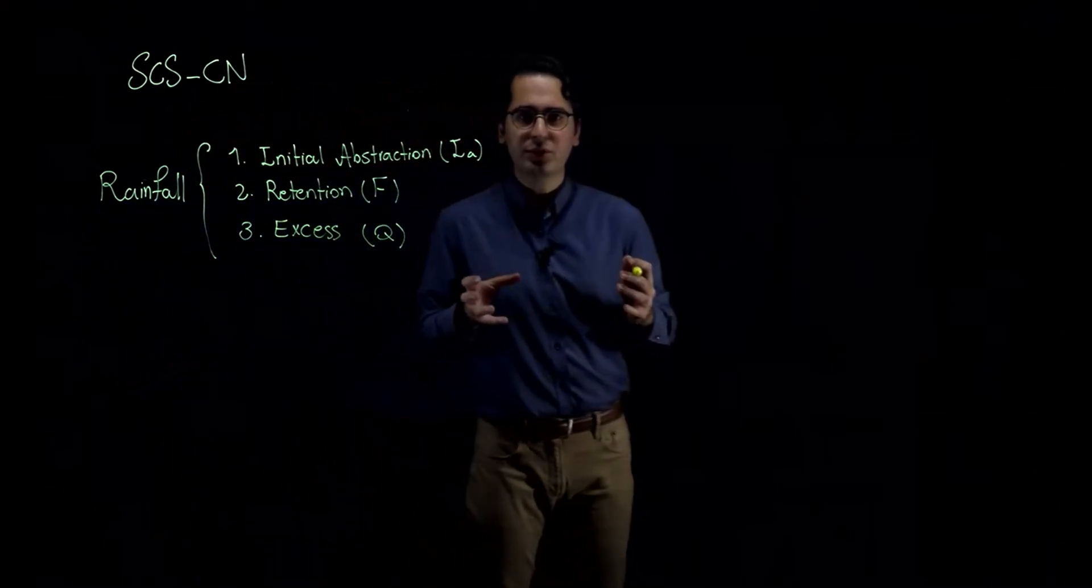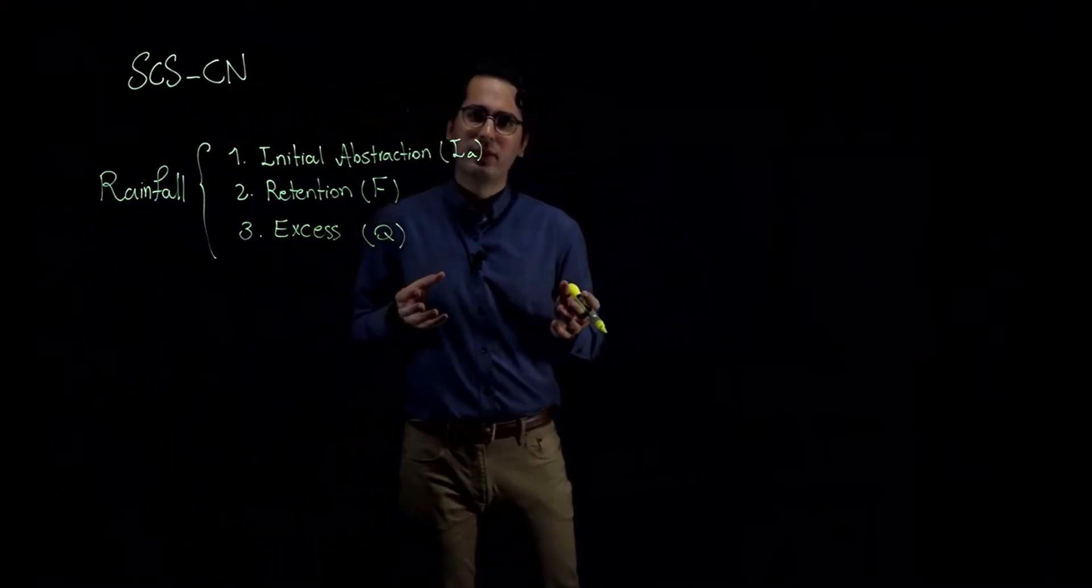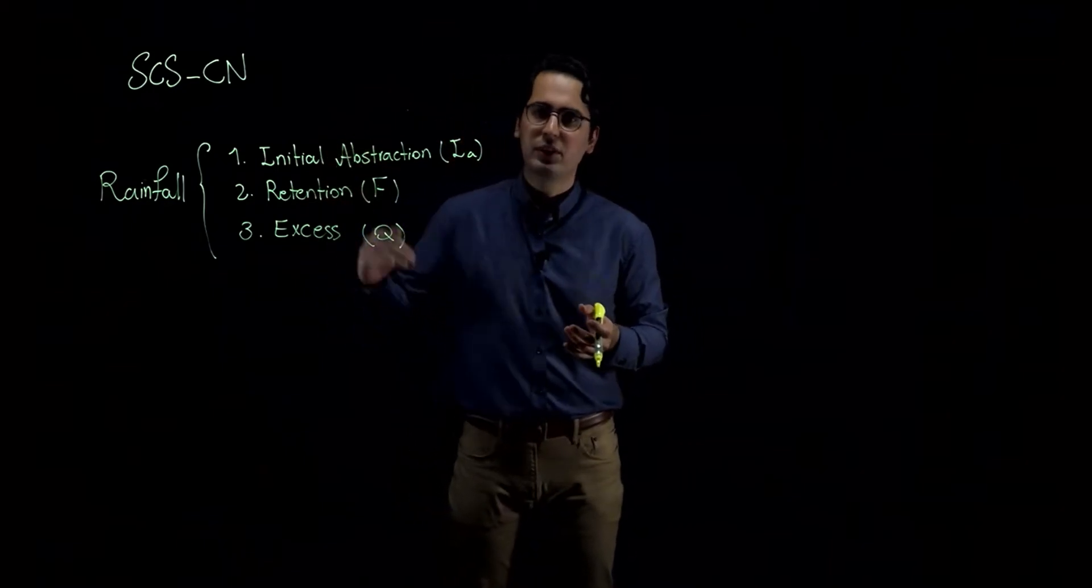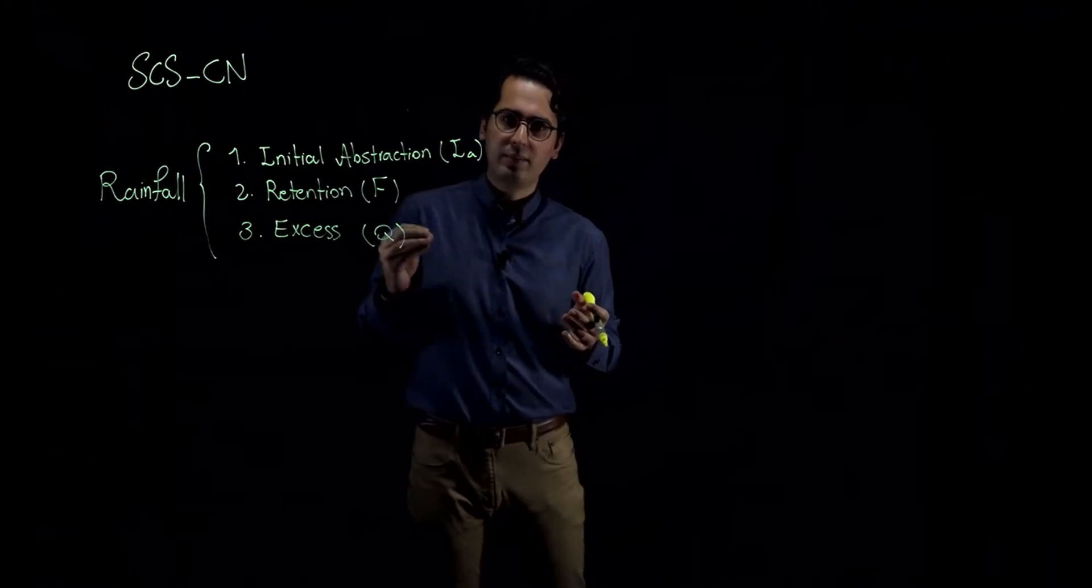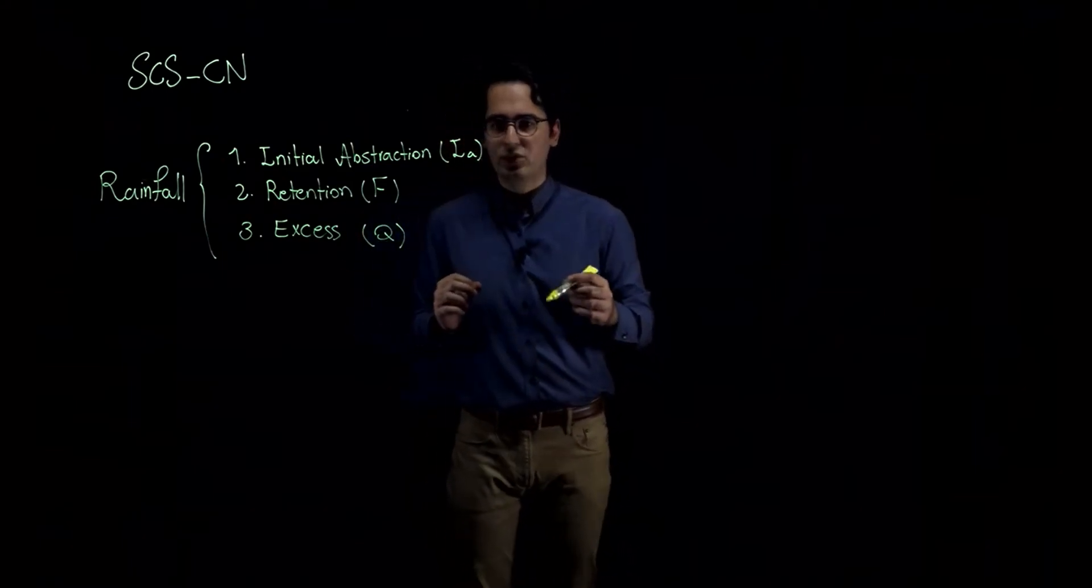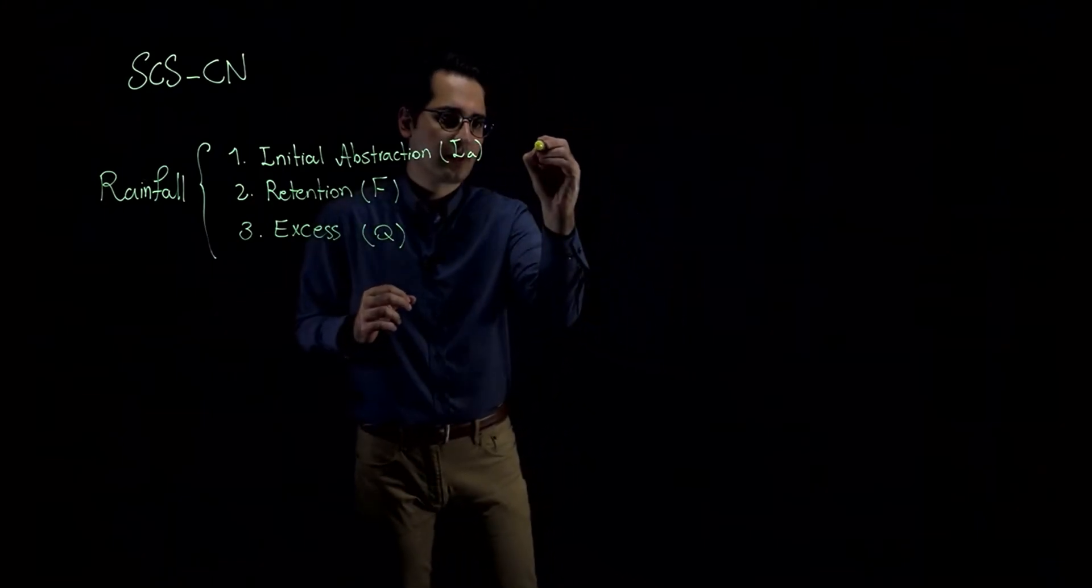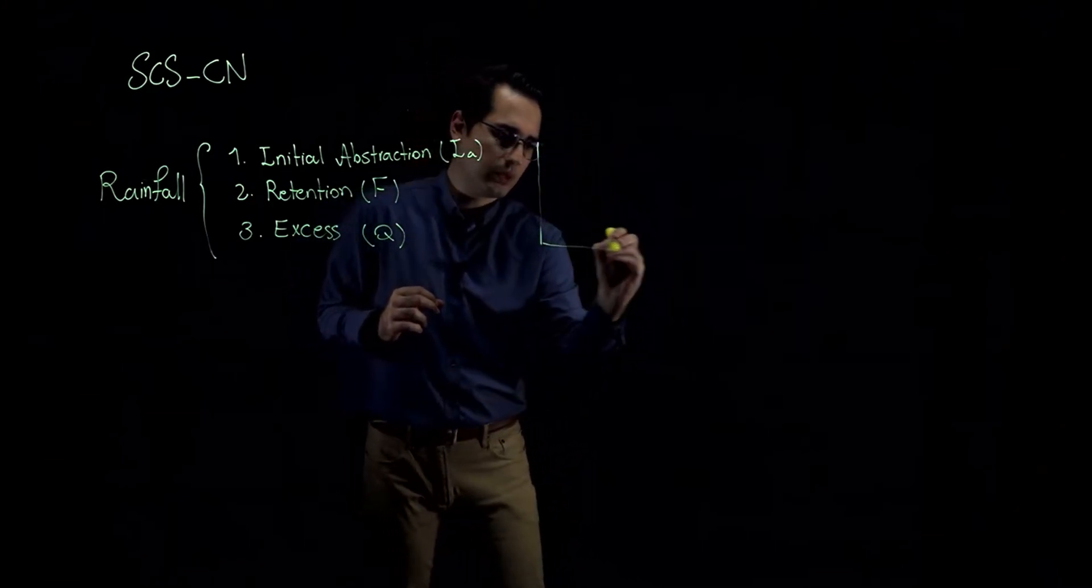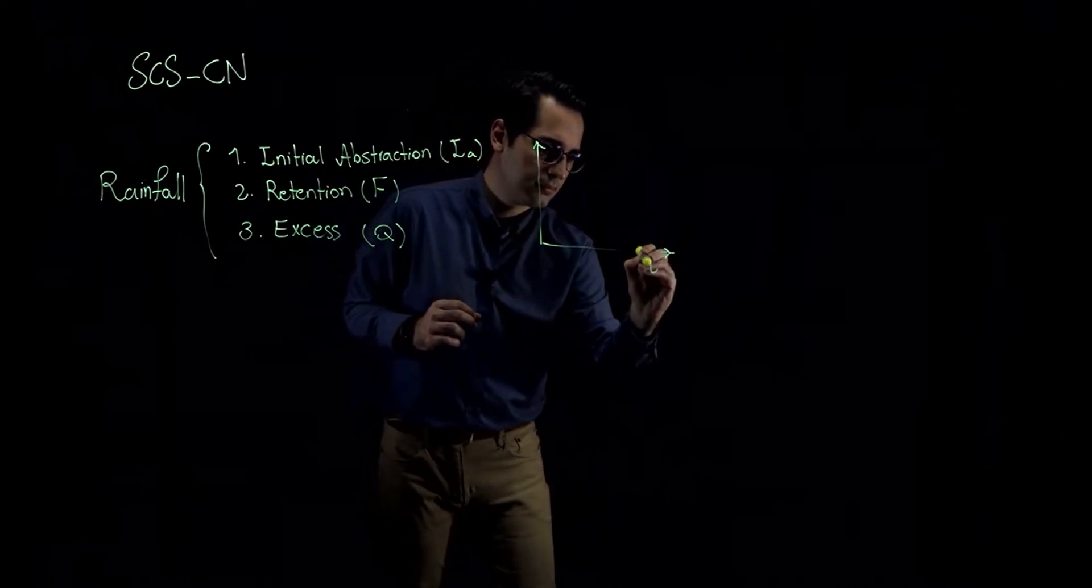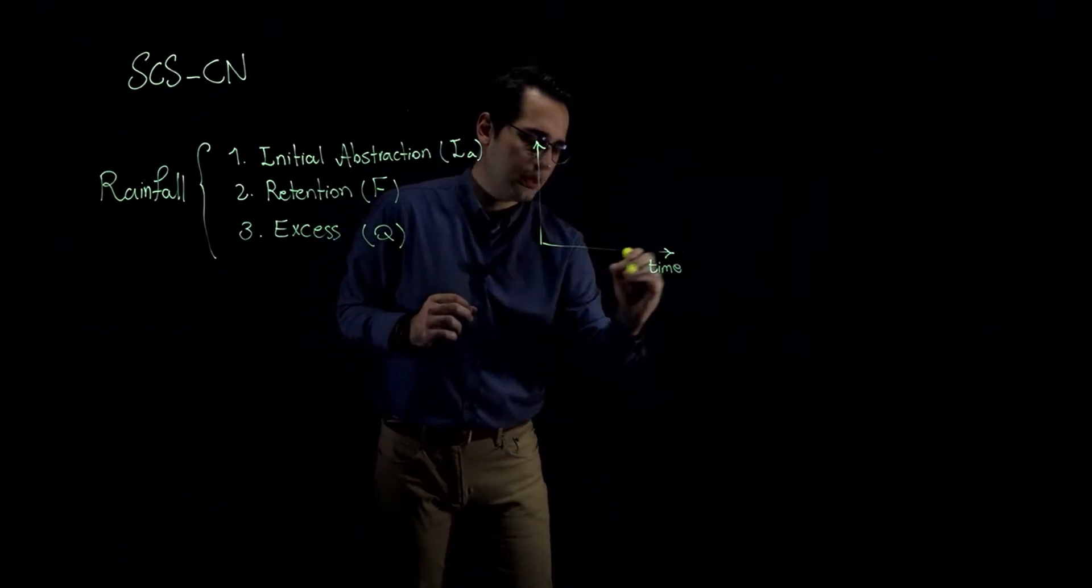Now in order to talk about the theory of SCS curve number method, we need to understand these three components and also be able to formulate these components. So what I'm going to do right now is show you a graph of these components. If I have time on the x-axis and if I have rainfall...